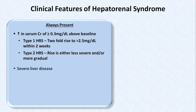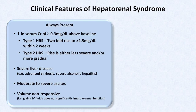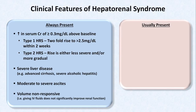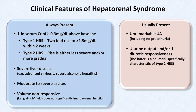All patients with HRS have severe liver disease — almost always either advanced cirrhosis or severe alcoholic hepatitis — and moderate to severe ascites. Notably, these patients are by definition volume non-responsive, meaning that when given moderate amounts of IV fluids, generally albumin, their renal function does not significantly improve. Features usually but not always present include an unremarkable urinalysis with no significant proteinuria, decreased urine output and/or decreased diuretic responsiveness, and a low urine sodium under 10 mEq per liter with a FENa less than 1%.